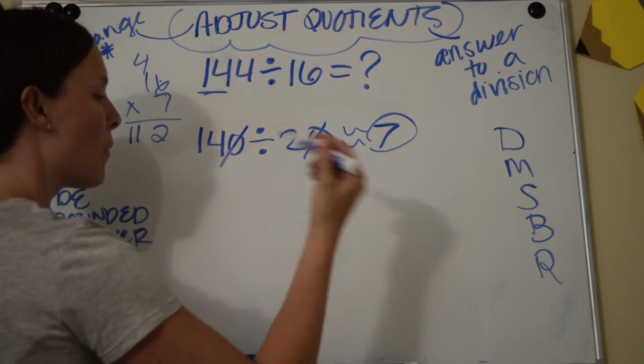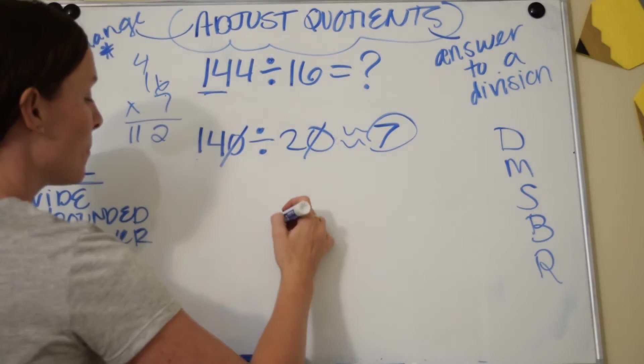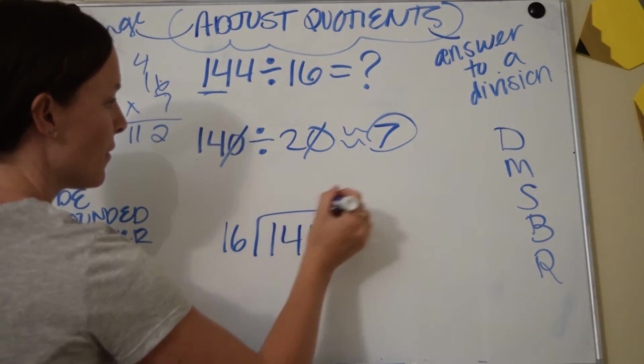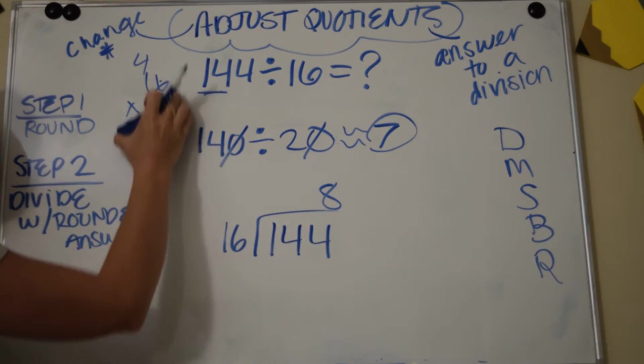If I have a big remainder, round your rounded answer up. So I'm going to see maybe it's 8. So I'm going to do 144 divided by 16 and see if the answer comes out to 8. So now I need to solve. Okay, what is 16 times 8?